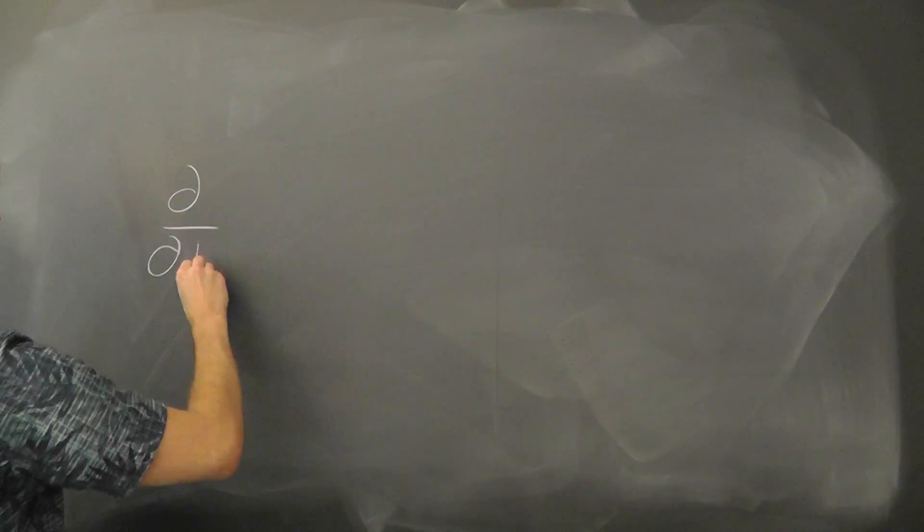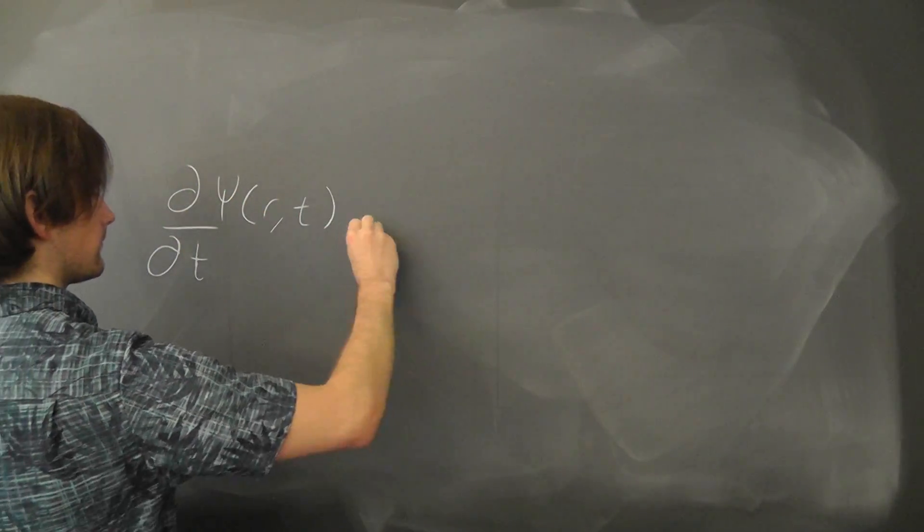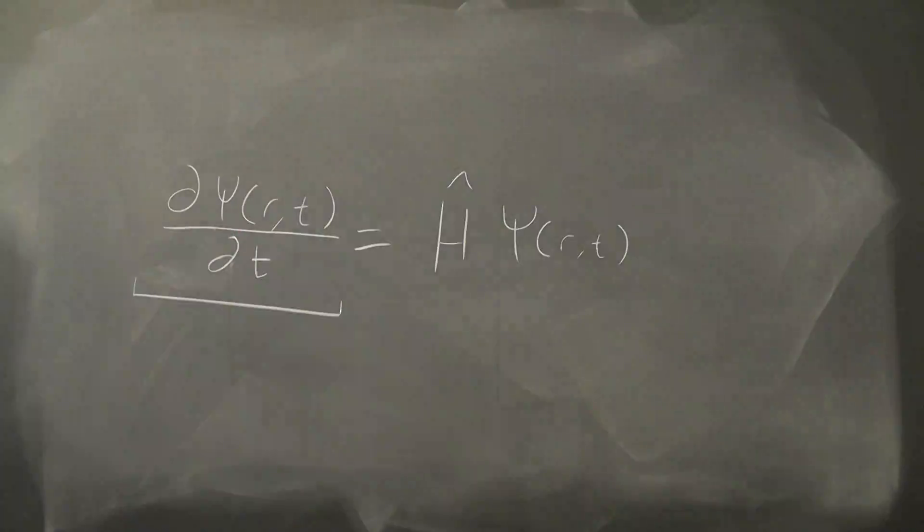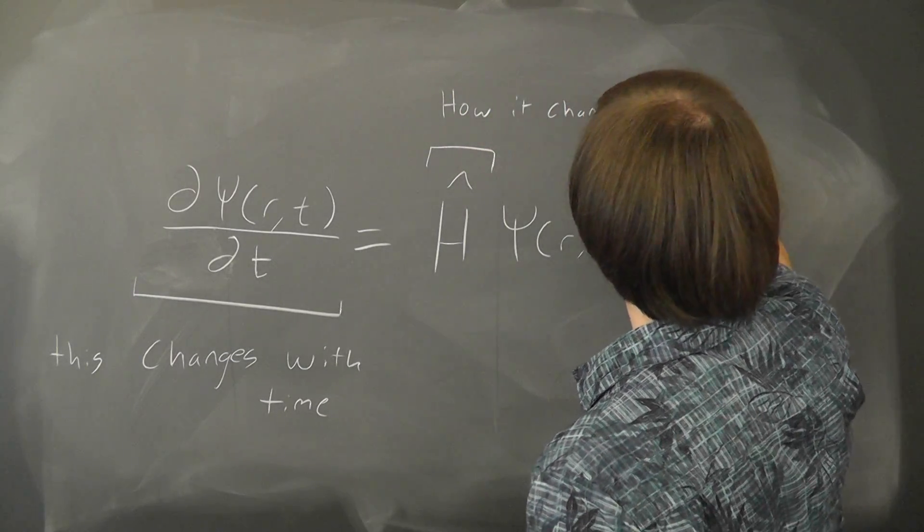How do we simulate our quantum system? If we want to describe the movement of our quantum system with time, we often look to the Schrödinger equation. On the left, it tells us that our wave function changes with time. And on the right, it tells us exactly how that happens.